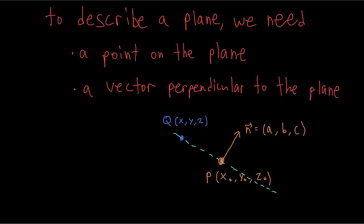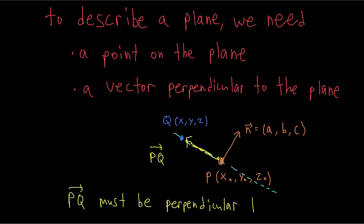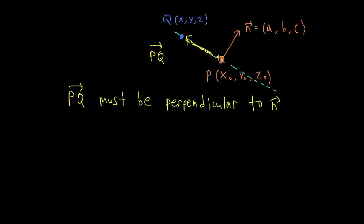Q stands for any point on the plane. For any point on this plane, we can draw a vector from our initial point P to this new point Q. This vector PQ, since P and Q are both points in the plane, is parallel to the plane, and therefore it is perpendicular to our normal vector. Now, how do we convert this to an equation? Well, we know PQ is perpendicular to the normal vector, so their dot product must be equal to zero.